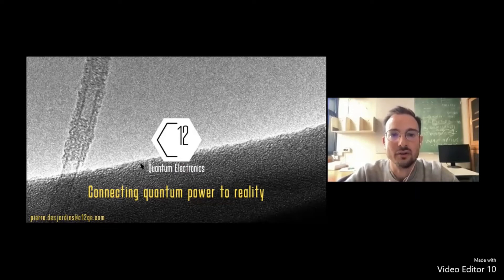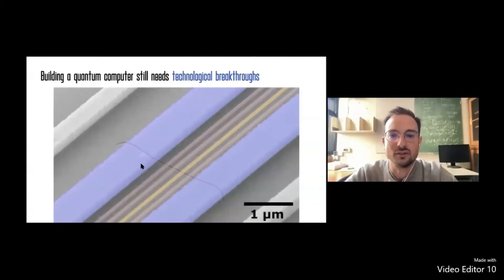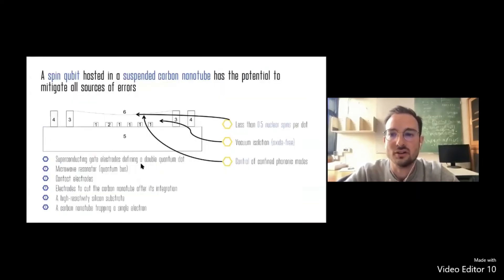Our core know-how is to integrate carbon nanotubes on a semiconductor chip and transform them into high-fidelity qubits. Thanks to this architecture, we have no nuclear spin in the double quantum dots, screening of the charge noise coming from the substrate, and control of the phononic noise.